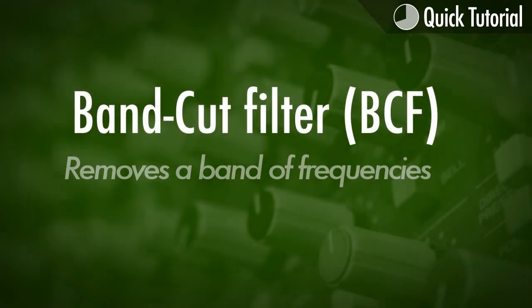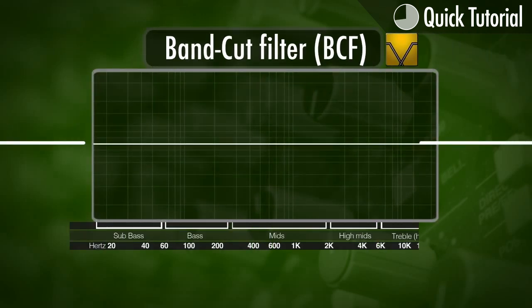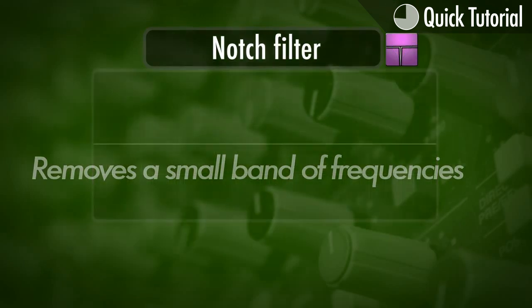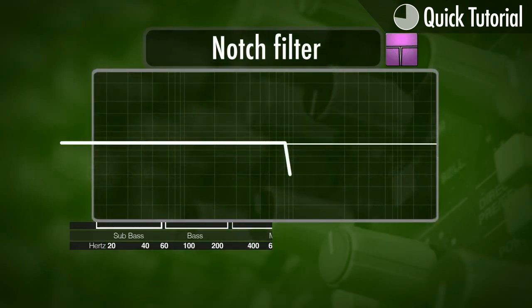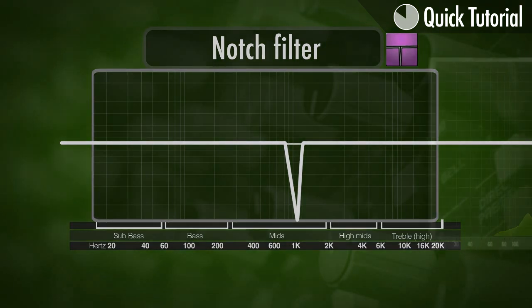The next is a band cut filter. This allows us to remove a band of frequencies while keeping the frequencies below and above it. A notch filter is a type of band cut filter, but it has a really narrow band so it only removes a very small group of frequencies.